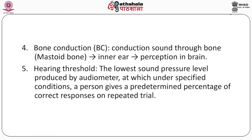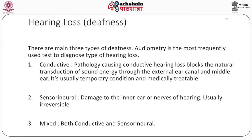Next, hearing threshold: the lowest sound pressure level produced by an audiometer at which, under specified conditions, a person gives a predetermined percentage of correct responses on repeated trials. Number six is hearing loss or deafness. There are three main types of deafness. Audiometry is the most frequently used test to assess and diagnose hearing loss.